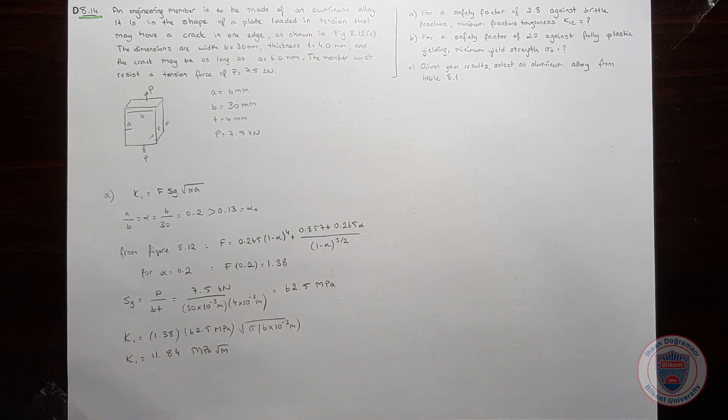We know that we have the safety factor of 2.8, which is xk. And we know that the safety factor is equal to K1c over K1. We know K1. So when we multiply K1 with 2.8, we will find K1c. And it will be equal to 33.16 MPa square root meters. We are done with part A.